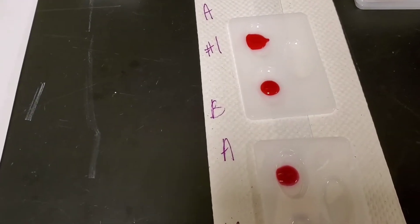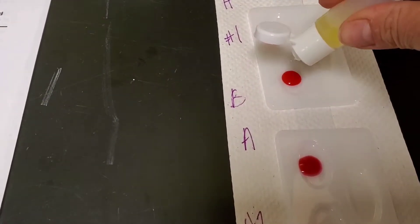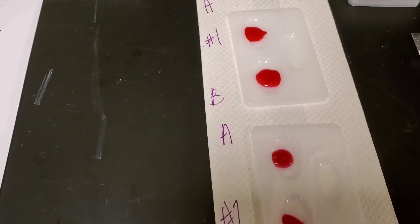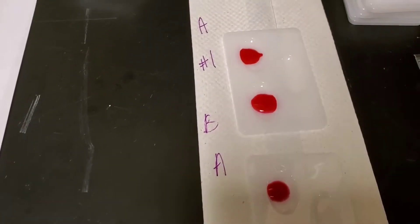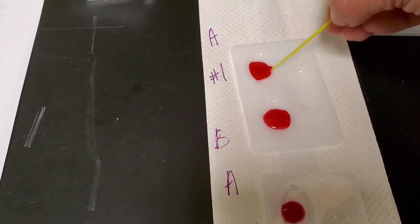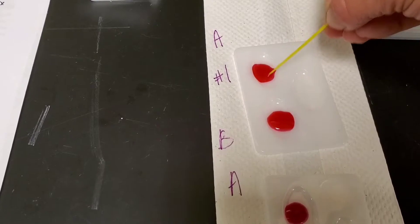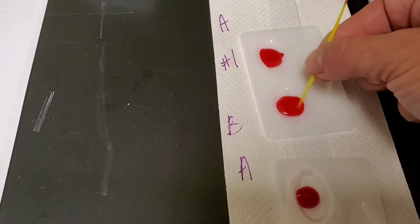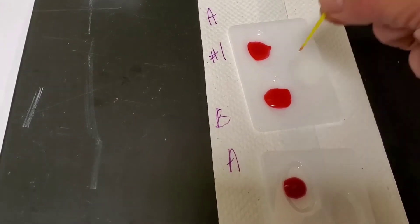Now I'll take a little q-tip and mix it all around. I'm going to flip my q-tip over so I don't put one kind of blood in with another.